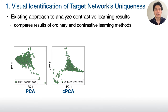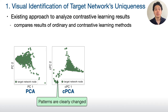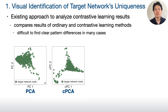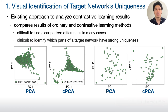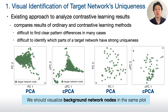For the first problem, similar to existing works, comparing the result obtained by ordinary and contrastive learning methods is a potential solution. For example, by comparing PCA and contrastive PCA results, if we can find clear pattern differences, we can say that contrastive PCA finds the target dataset's uniqueness that PCA does not find. However, in practice, this approach does not work well, because in many cases we cannot see clear differences between patterns obtained by PCA and contrastive PCA, as shown here. Also, even if we see clear differences, we still do not know which region is highly related to the target dataset's uniqueness. These problems are mainly because we do not know how nodes in a background dataset distribute in the same space with the target dataset.